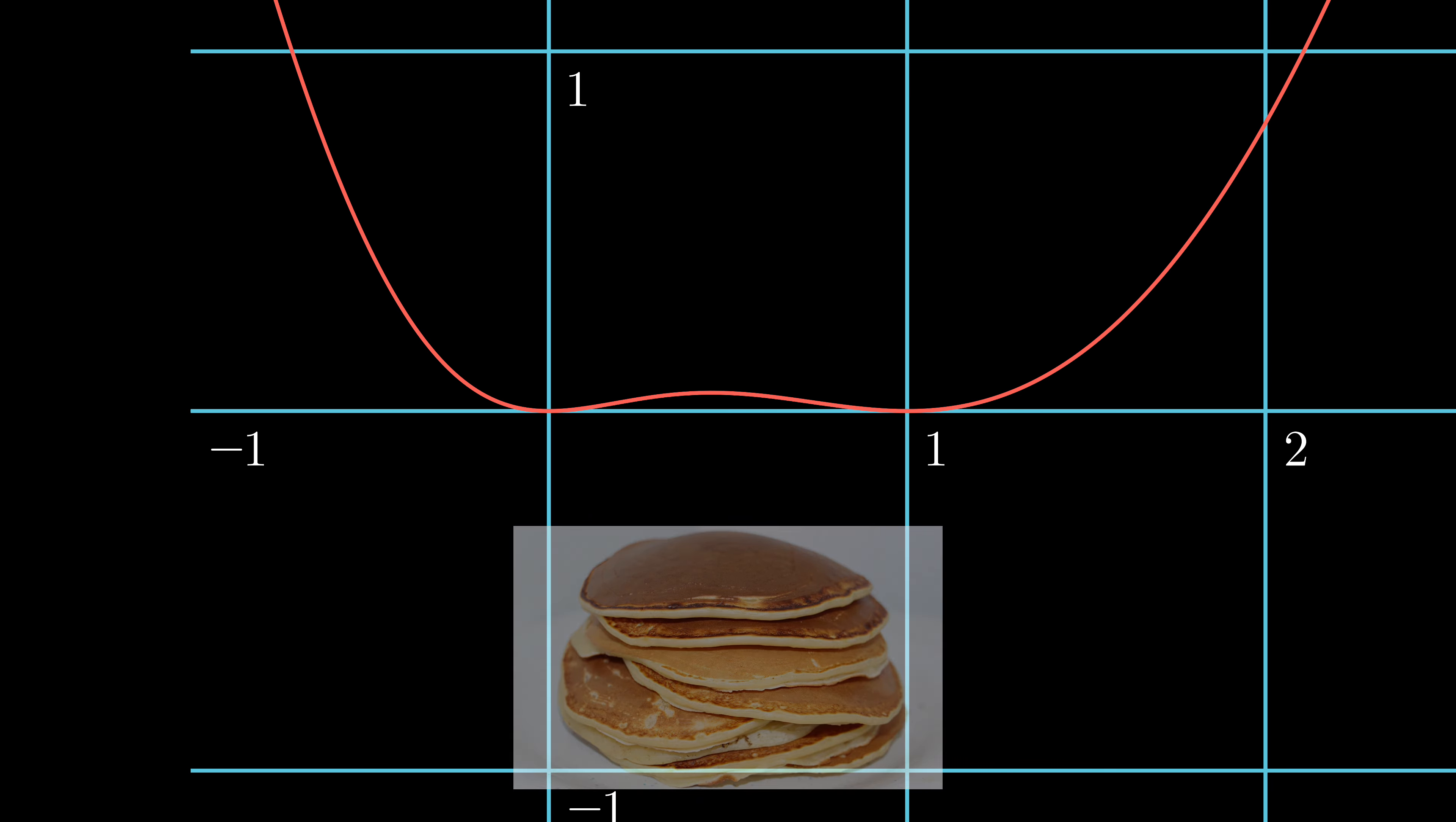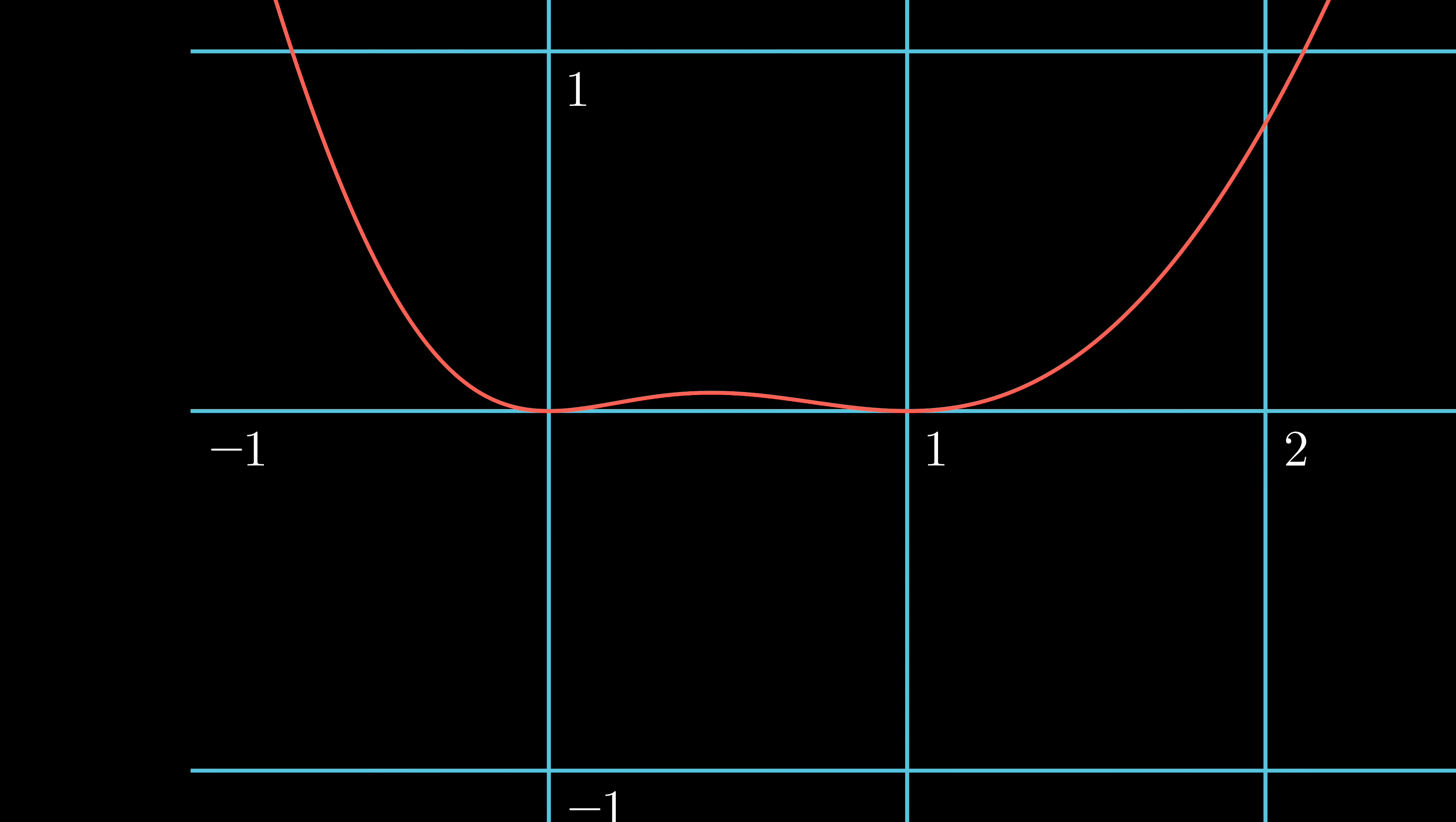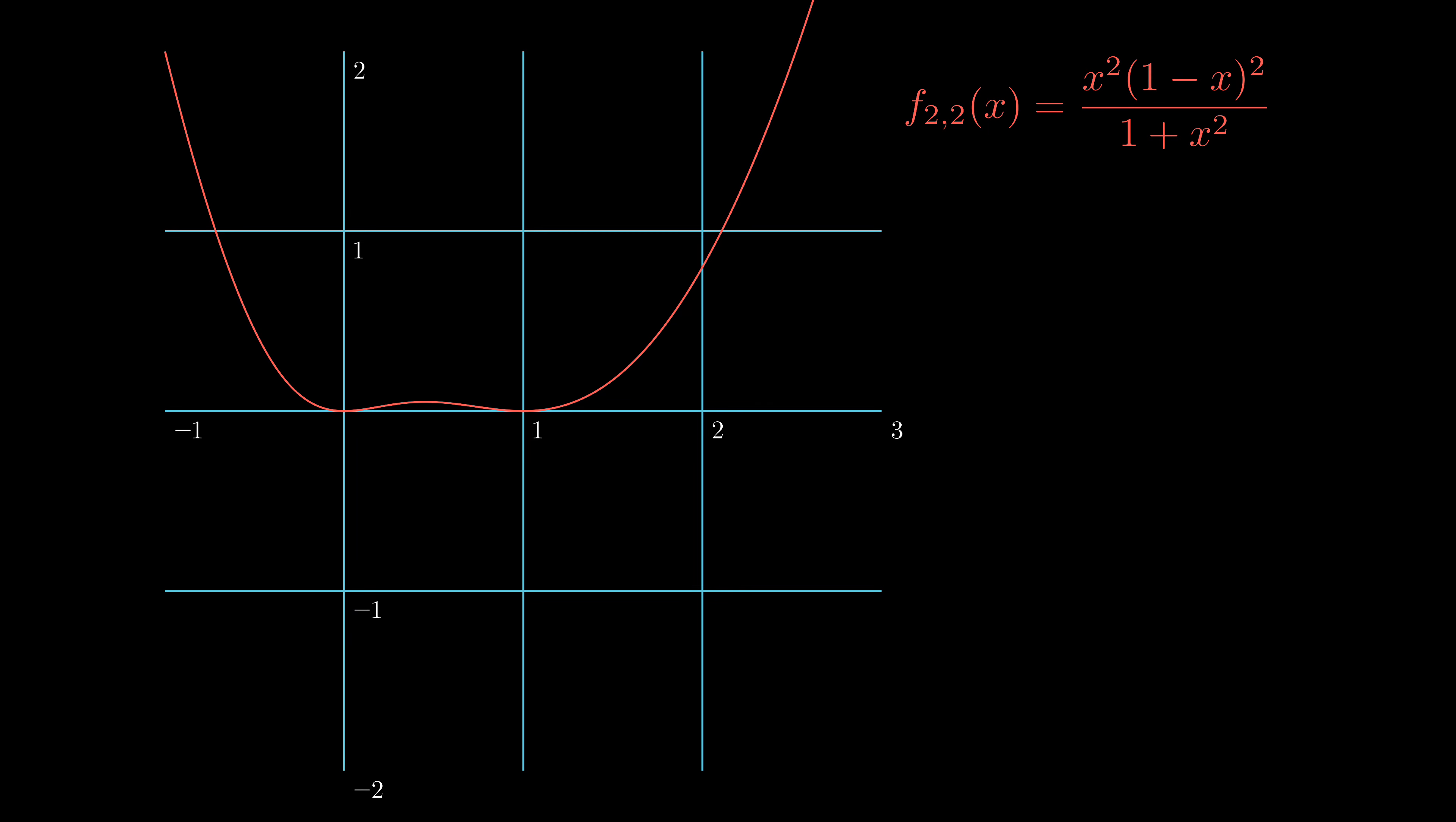Let's plot the first few integrands when m and n are equal. F2 looks like a quadratic equation, but it's flattened between 0 and 1. What does this look like? A pancake, right? When m and n become larger and larger, the pancake becomes thinner and flatter.